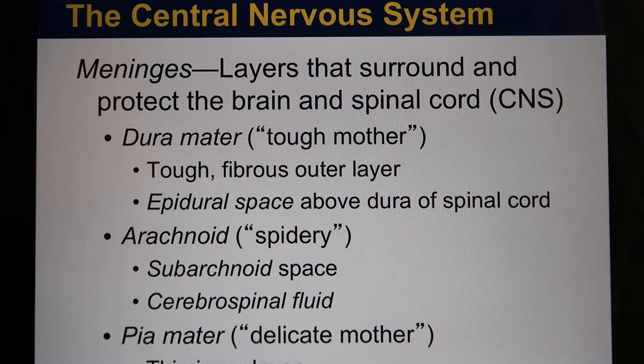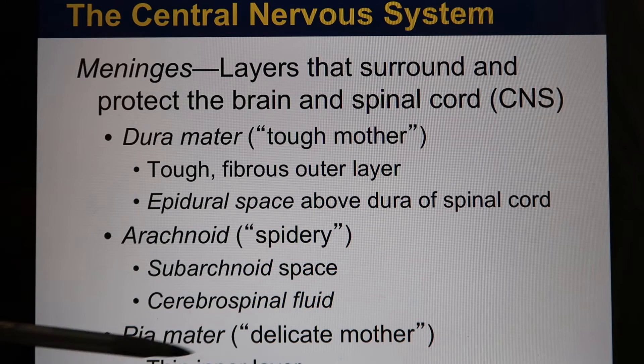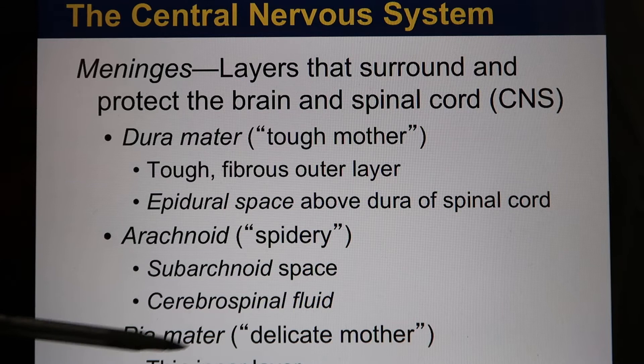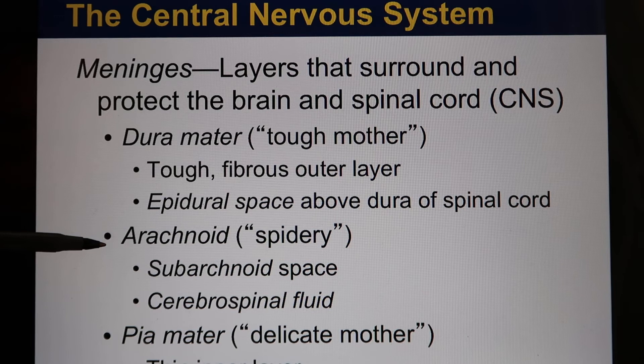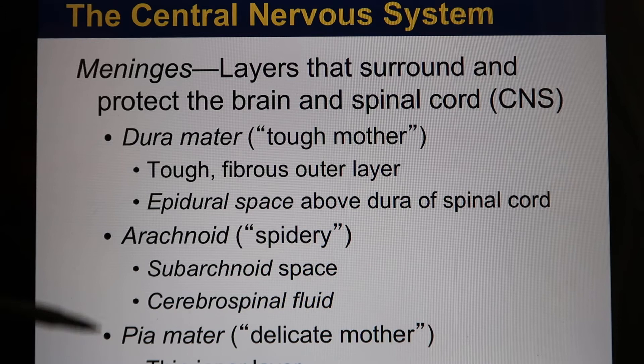The brain is covered by a membrane called the meninges, which is actually three layers fused together: the dura, arachnoid, and pia. From the inside, the pia is the thin, delicate, soft layer that directly touches the brain. The arachnoid is in between, with a subarachnoid space filled with cerebrospinal fluid. The dura is the outermost layer, touching the skull, so it must be tough. All three layers together are called the meninges.